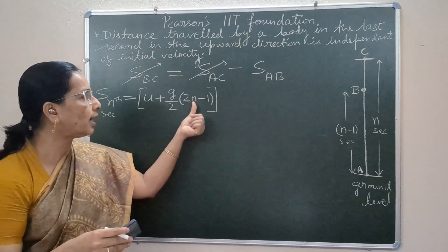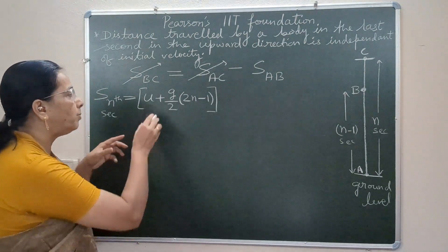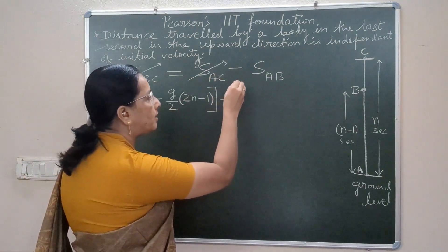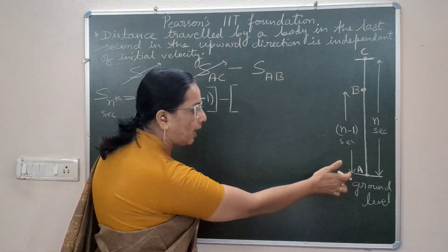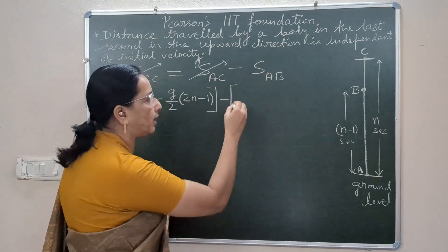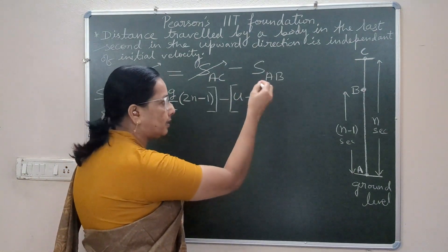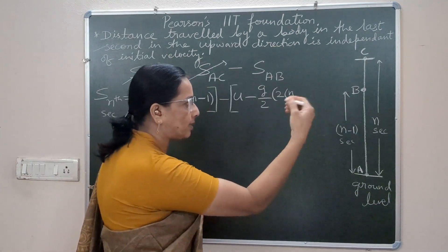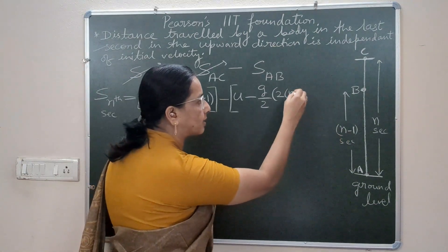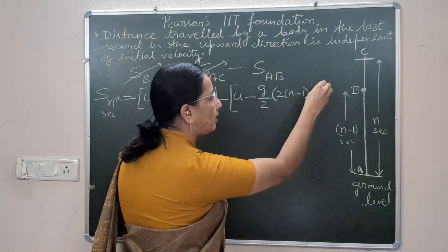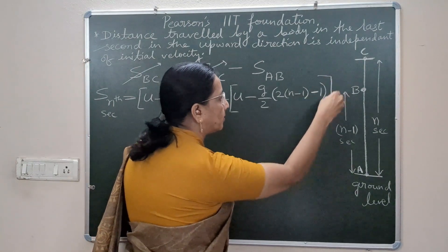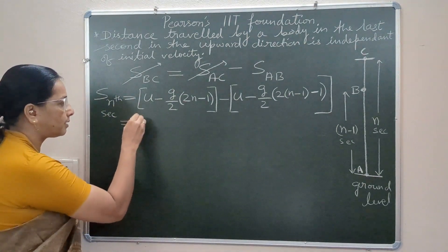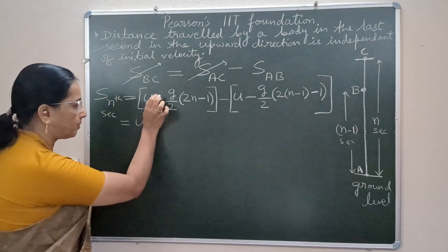For A to C, time taken is n seconds, and because it is upward motion we write minus: u minus g by 2 times (2n minus 1). For distance traveled from A to B in n minus 1 seconds, it is u minus g by 2 times (2(n minus 1) minus 1), where n is replaced by n minus 1, giving n minus 1 minus 1.